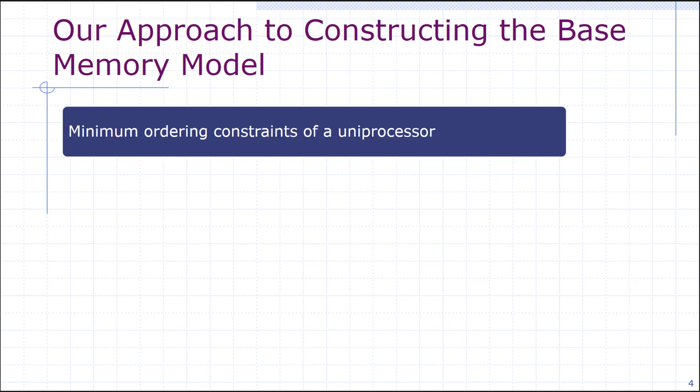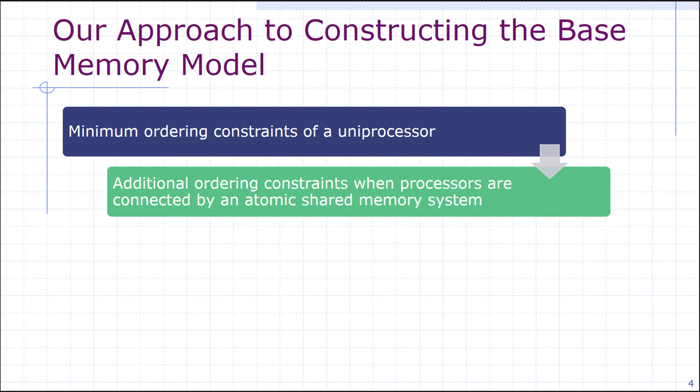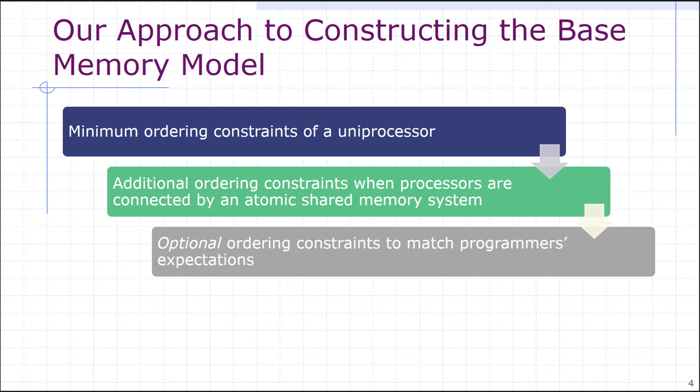Our approach to constructing the base memory model consists of three steps. First, we derive the minimum ordering constraints of a uniprocessor. Next, we derive the additional ordering constraints when processors are connected by a shared memory system. Finally, we show that there are optional ordering constraints to match programmers' expectations, and different models can make different choices here.